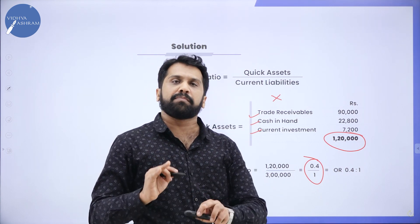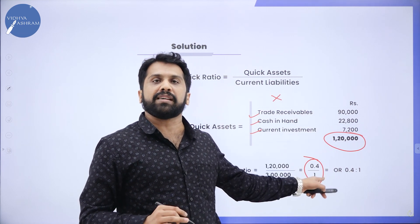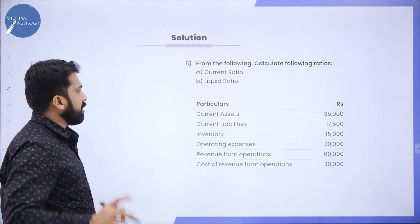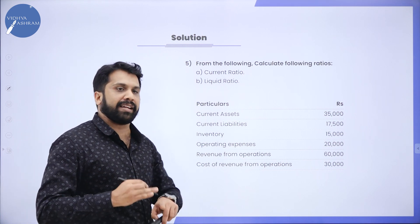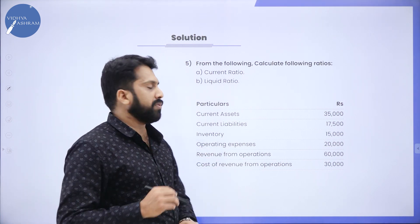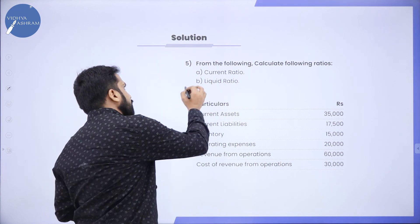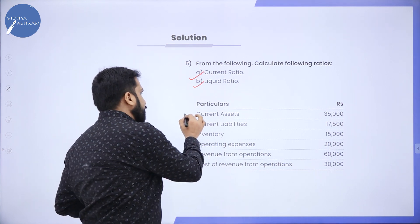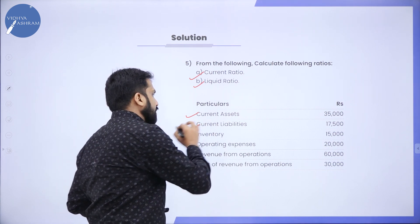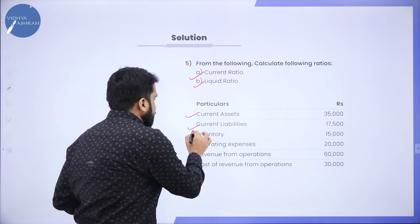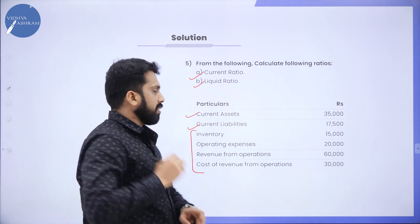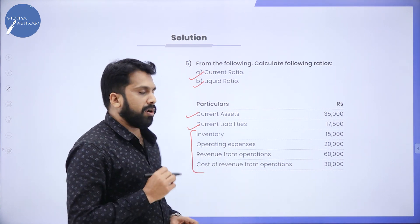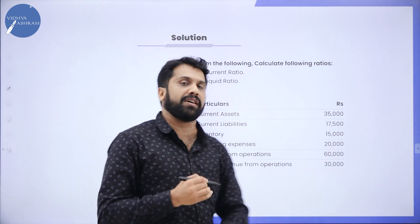Very simple, but you have to be thorough with formulas and identification of Current Assets and Current Liabilities. We'll move to the last problem for the day. In this problem, we have to calculate Current Ratio as well as Quick Ratio. They have given Current Asset and Current Liability directly. Additional information includes Inventory, Operating Expenses, Revenue, Cost, and Revenue from Operations — these are not relevant for the calculation.